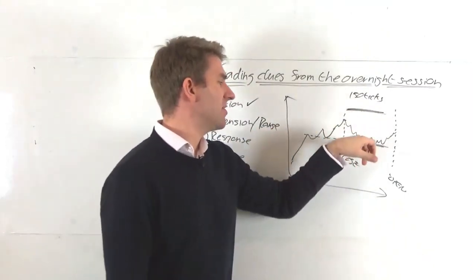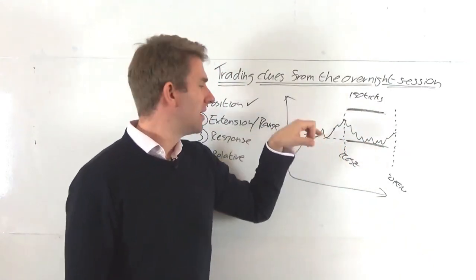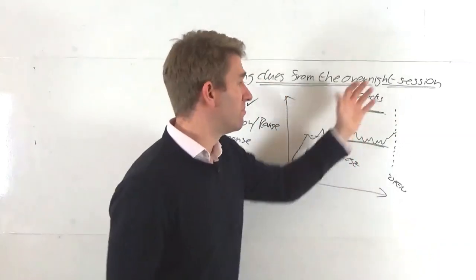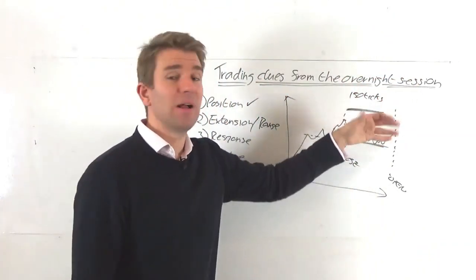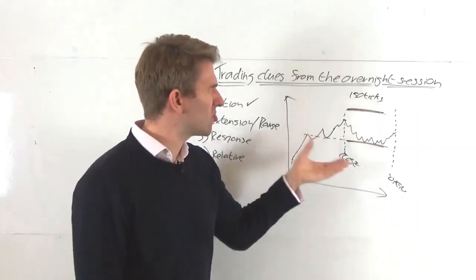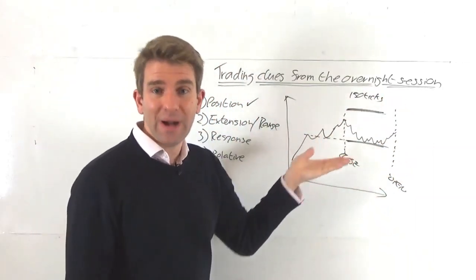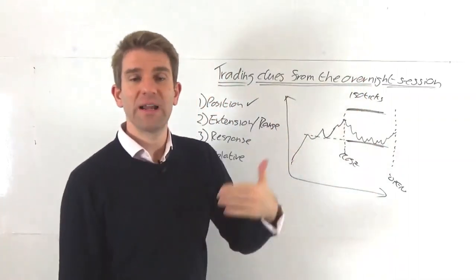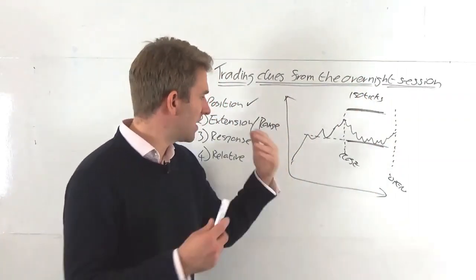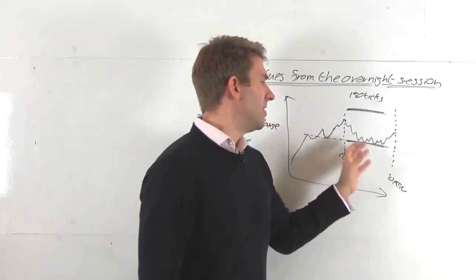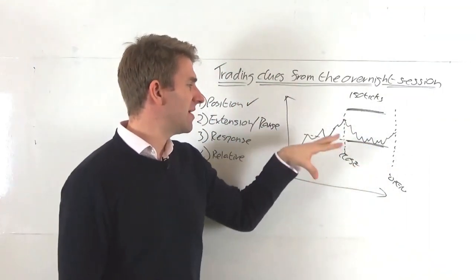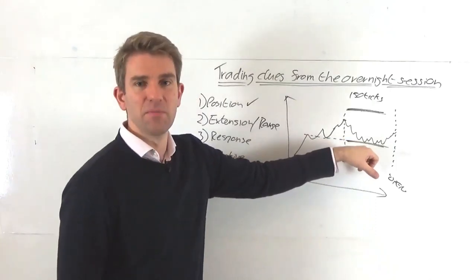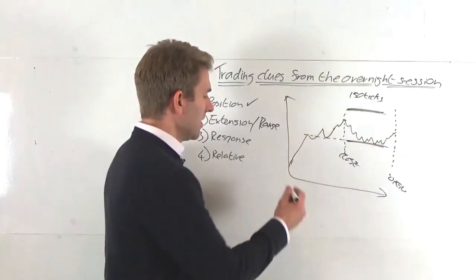So we looked at the range and the response — how does it respond to prior key levels from the prior day's trade and bigger key levels from further back? What's the price response to those? It could break through and hold above, in which case maybe we're going to get a pullback. I wouldn't want to go straight in; I want to see a pullback response. Relative is also about how much we've encroached in the overnight session into the prior day's trade.